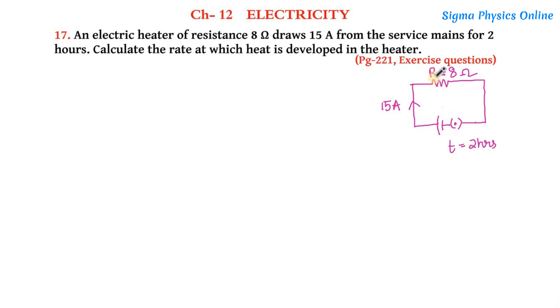When it is used for a period of 2 hours, that is when this heater whose resistance is 8 ohm is used for 2 hours, it draws a current of 15 ampere from the service mains. So we have to find out the rate at which heat is developed.